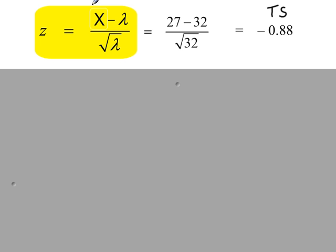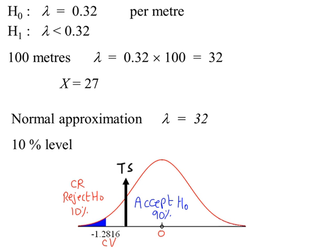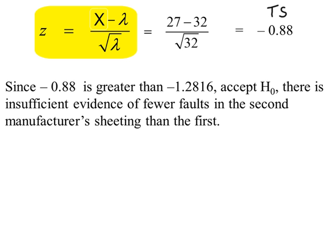This is the formula used to calculate the test statistic. Our X value, the evidence given in the example, is 27. Our modified value of lambda is 32. So our test statistic is minus 0.88. So our test value falls in the acceptance region. It's greater than minus 1.2816. So we accept H0 and within the context of the example, we say there is insufficient evidence of fewer faults in the second manufacturer's sheeting than the first.